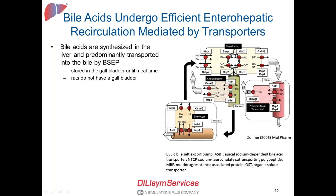Let's review the general enterohepatic recirculation process. Once synthesized within hepatocytes, bile acids are predominantly transported into bile by the BSEP transporter. Within bile, they are stored in the gallbladder until mealtime. When a meal is given, through hormonal signals, the gallbladder contracts and bile acids are released into the gut lumen. This is true for humans, mice, and dogs, but not for rats — rats do not have a gallbladder, meaning bile acid secretion into the intestine will be more continuous rather than pulsed after mealtime.